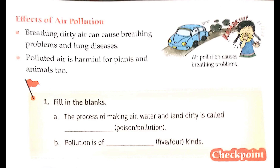Second question: pollution is of dash kinds. We learnt pollution is of four kinds. What are they? Air pollution, water pollution, land pollution, and noise pollution. There are four types of pollution. Now we learnt about air pollution. Hope all of you understood this. Thank you.